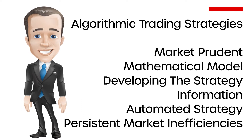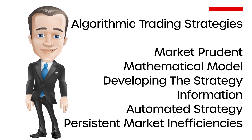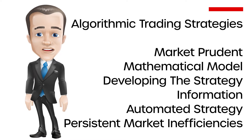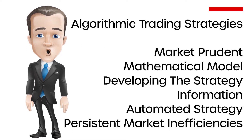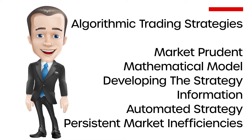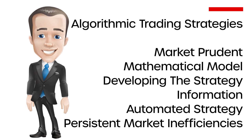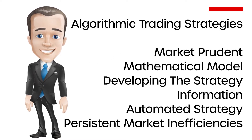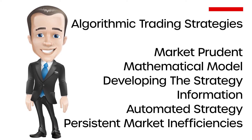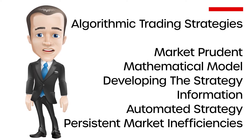Algorithmic Trading Strategies. It is important to begin by reflecting on some core traits that every algorithmic trading strategy should have. The strategy should be marked prudent in that it is fundamentally sound from a market and economic standpoint. Also, the mathematical model used in developing the strategy should be based on sound statistical methods. Next, it is crucial to determine what information your robot is aiming to capture. In order to have an automated strategy, your robot needs to be able to capture identifiable, persistent market inefficiencies.